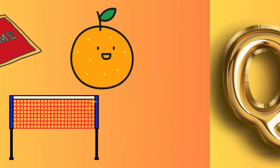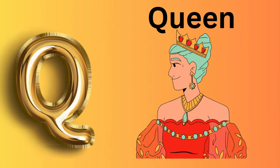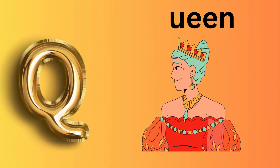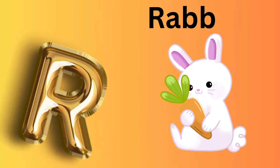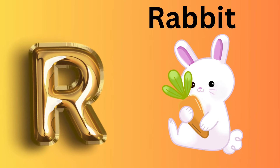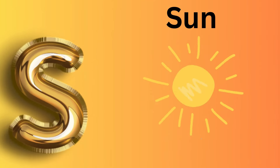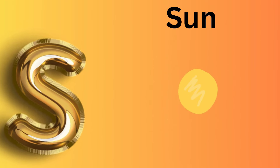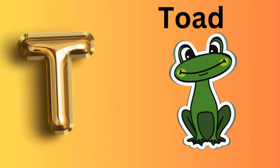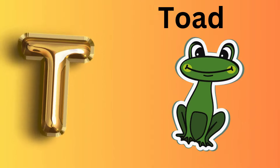Q is for Queen, K-Queen. R is for Rabbit, R-R-Rabbit. S is for Sun, S-S-Sun. T is for Toad, T-T-Toad.